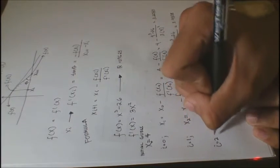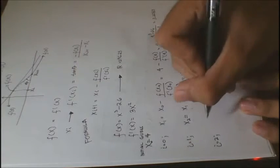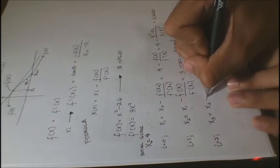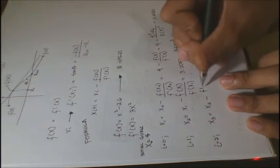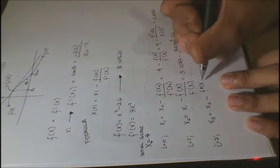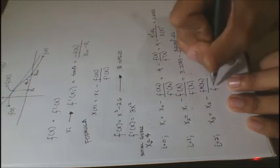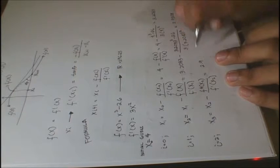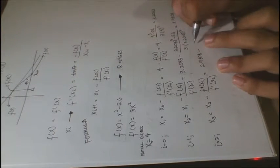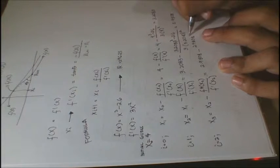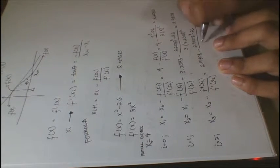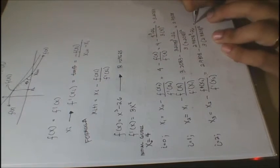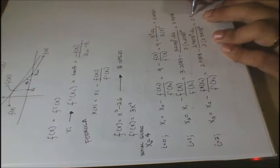Now, for i equals 2, our equation will become x sub 3 is equal to x sub 2 minus f of x2 all over f prime of x2. So, the answer for that is 2.9808 minus 2.9808 cubed minus 26 all over 3 times 2.9808 squared. The answer for that will be 2.9626.